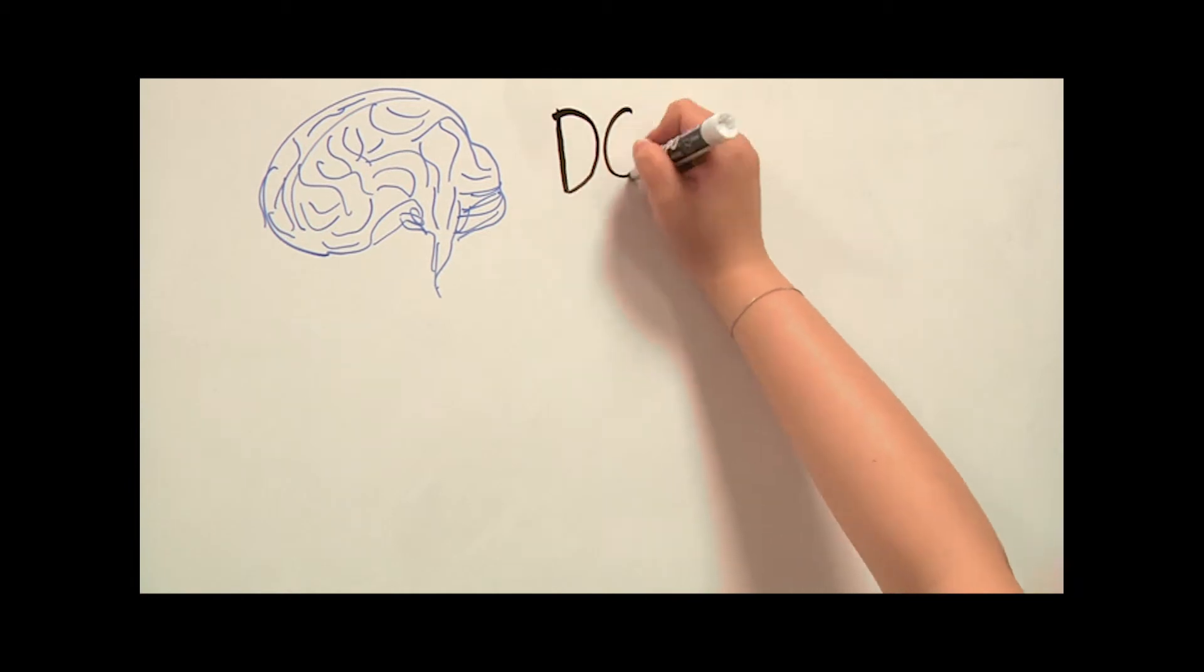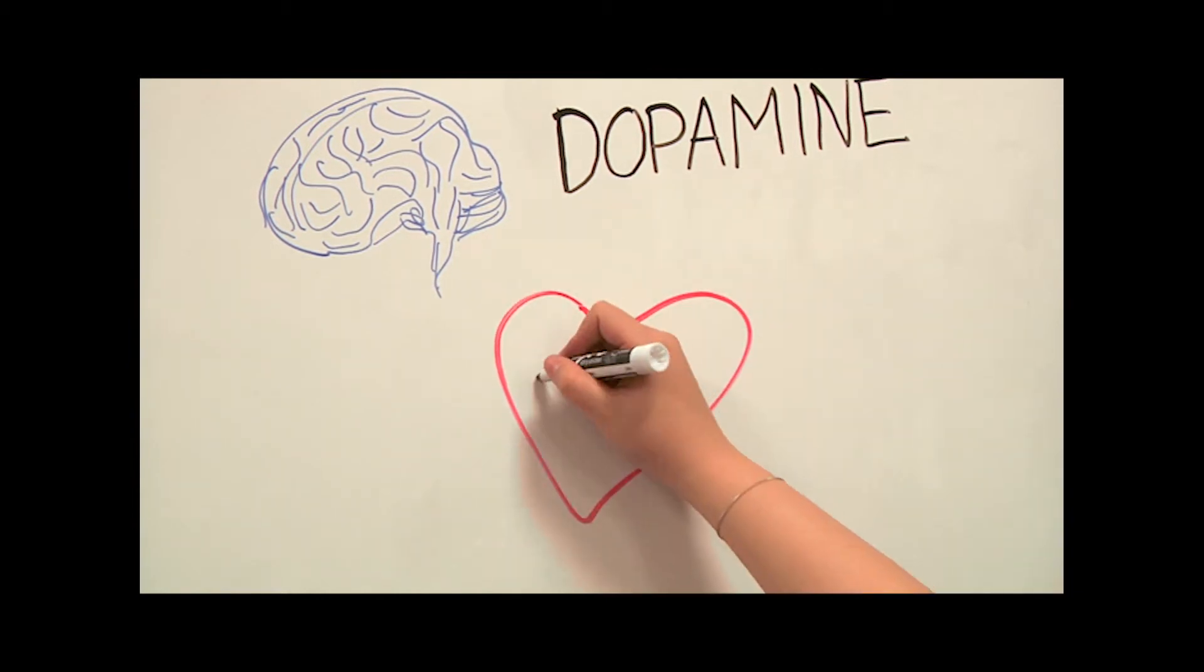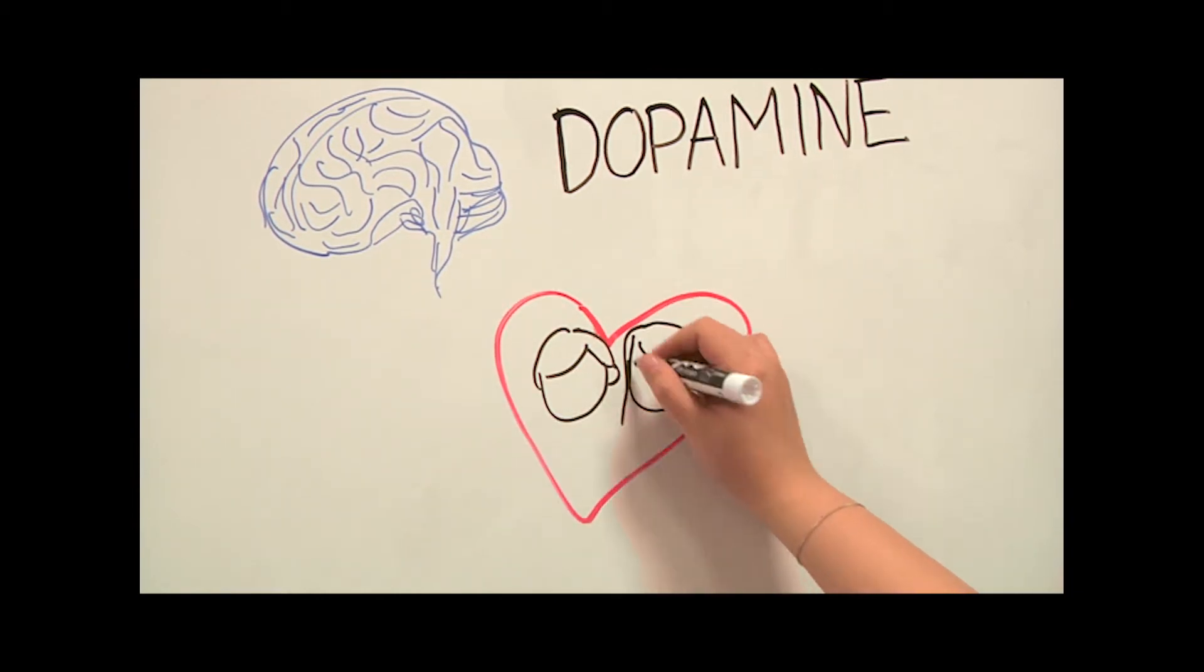Helen Fisher asked newly lovestruck couples to have their brains examined and discovered that they have high levels of the neurotransmitter dopamine. This chemical stimulates desire and reward by triggering an intense rush of pleasure. It has the same effect on the brain as taking cocaine.